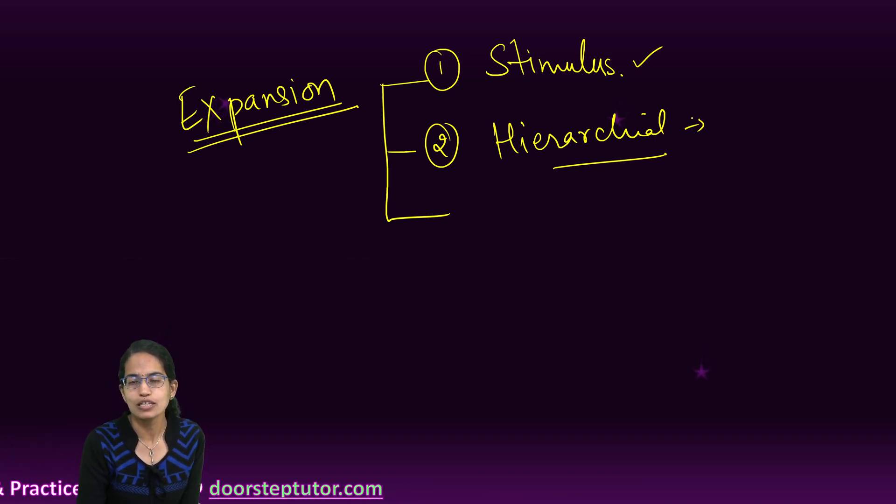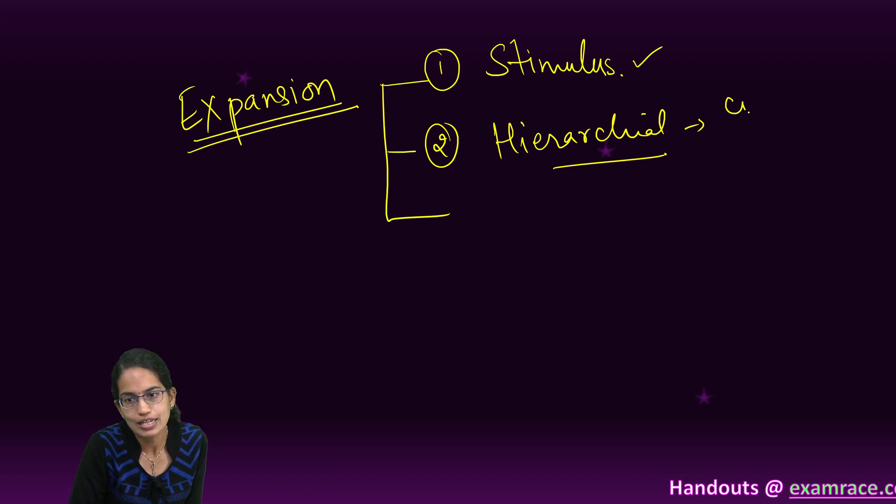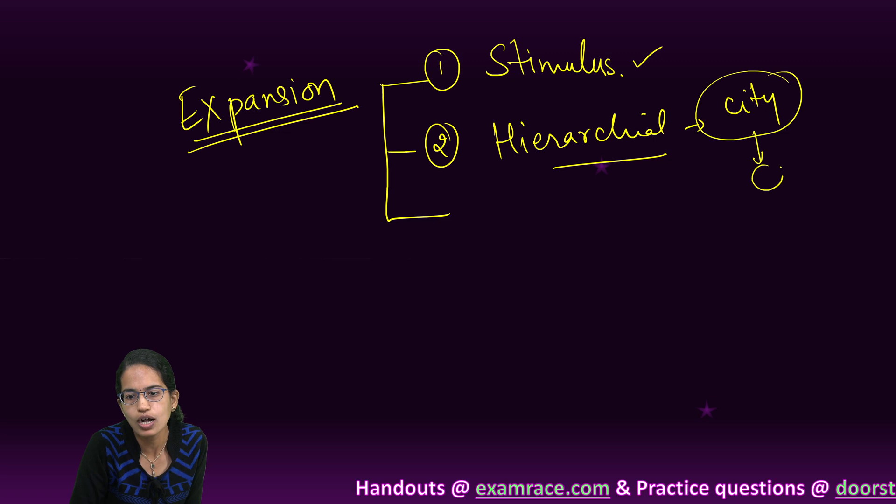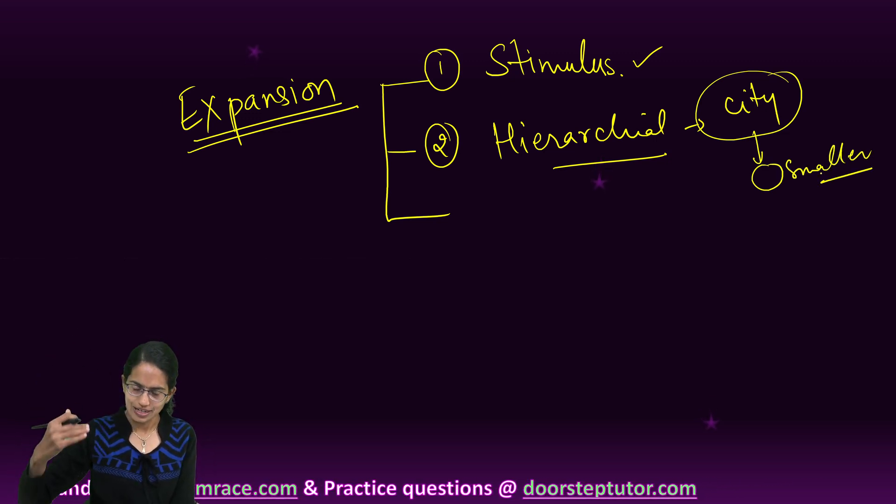But now, it's seen also in smaller towns, even very small villages. So it is hierarchical. It moves from a bigger city to a smaller city. This is what we call hierarchical diffusion.